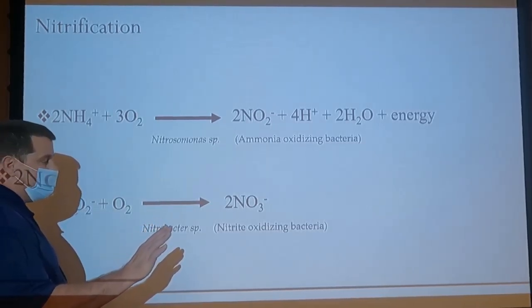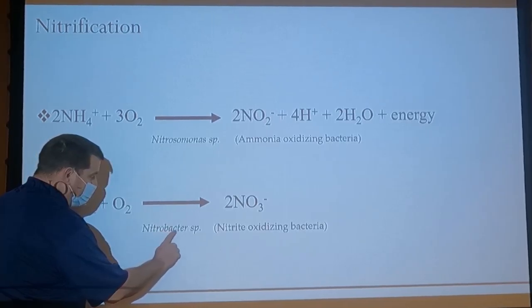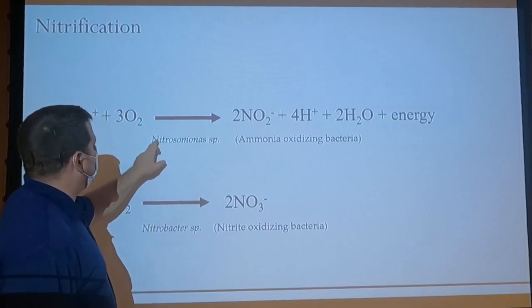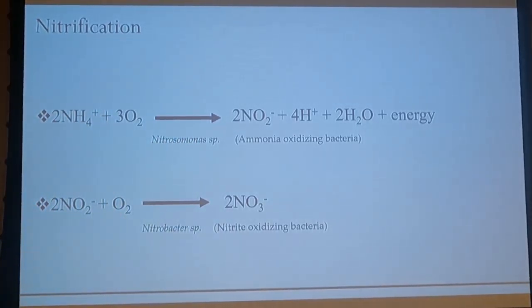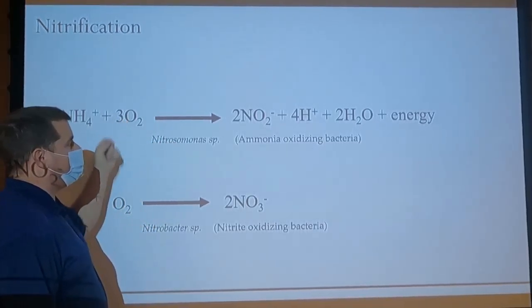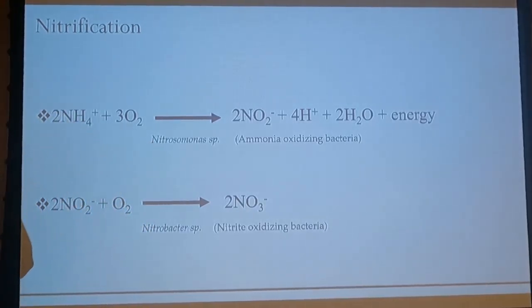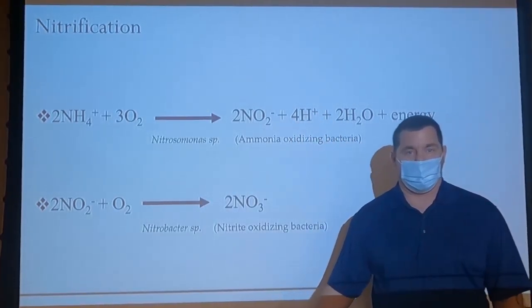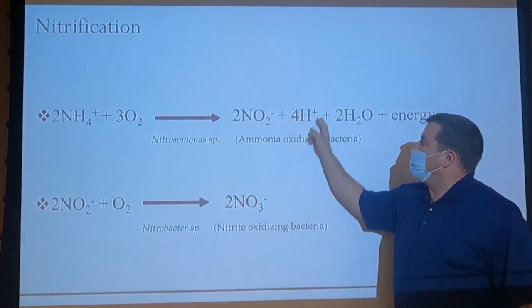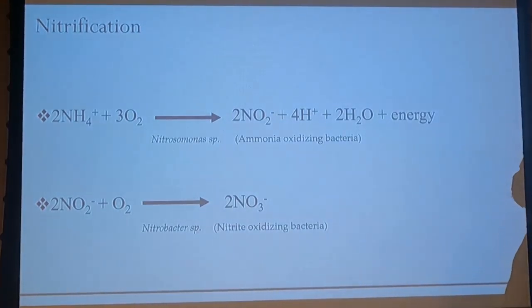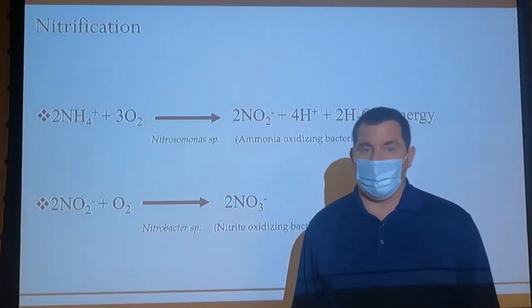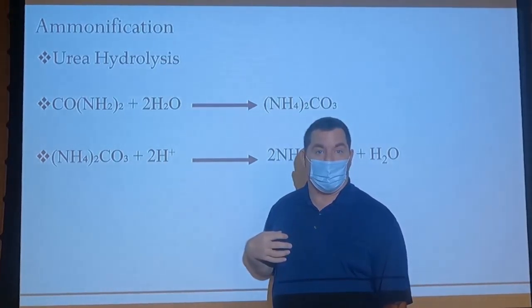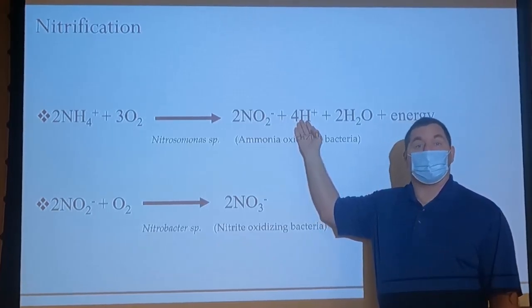A mnemonic: nitrobacter contains an 'A', so it's associated with nitRAte. Nitrosomonas is associated with ammonia. Notice that three oxygens are involved, and one of the byproducts is four hydrogens released into the soil. So what do you expect the pH to become? More acidic. Back during urea hydrolysis, the pH became more alkaline because we removed two hydrogens from the soil. During nitrification, we're releasing four hydrogens back, making the soil more acidic.